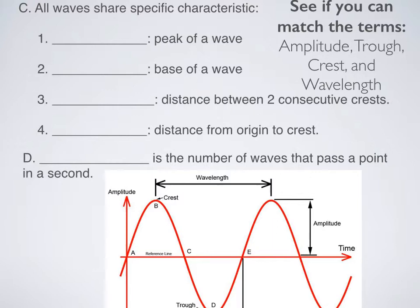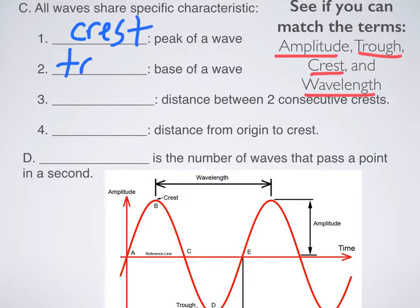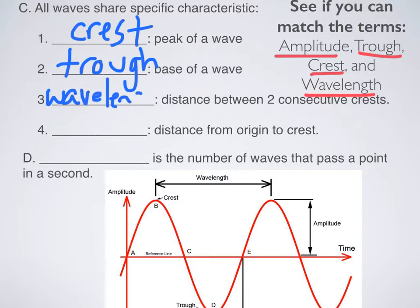If you've had a math class or physics class that talks about waves, these terms should be familiar. You can pause this and see if you can match the following terms with a definition: amplitude, trough, crest, and wavelength. The peak of the wave is called a crest. The base of a wave is called a trough. The distance between two consecutive crests is called a wavelength. And the distance from origin to crest is the amplitude.